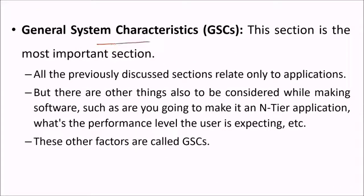GSC — general system characteristics — relates to things beyond the application itself that must be considered when making software, such as the overall architecture and the performance level you are expecting. These are the general system characteristics.